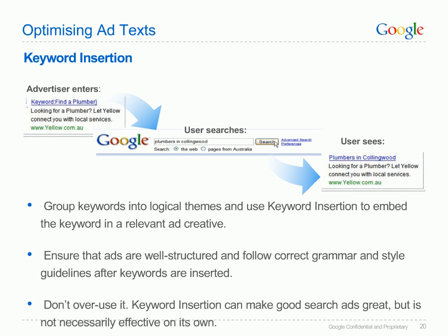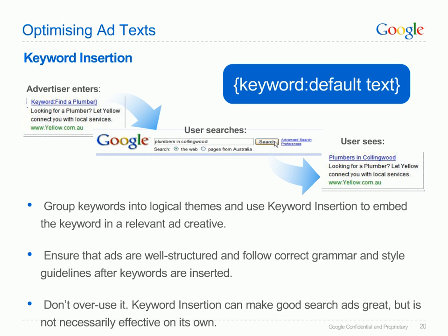Keyword insertion allows advertisers to match user search terms to ad text, increasing relevance for the user. Group keywords into logical themes and use keyword insertion to embed the keyword in a relevant ad creative. Ensure that ads are well structured and follow correct grammar and style guidelines after keywords are inserted. Don't overuse it — keyword insertion can make good search ads great but is not necessarily effective on its own. To use keyword insertion, insert the code shown on screen at any point in your ad text, including in the display URL or destination URL. When your ad appears on a search result page, the code will be replaced by the keyword that triggered the ad. If the keyword is too long and would cause the ad text to exceed its character limit, the ad's default text will be used instead. Replace the term 'default text' in the code example with the text you wish to show in case keyword insertion is not triggered.